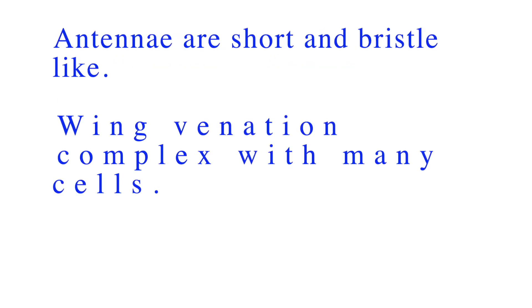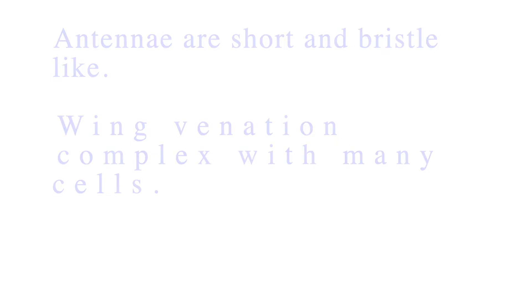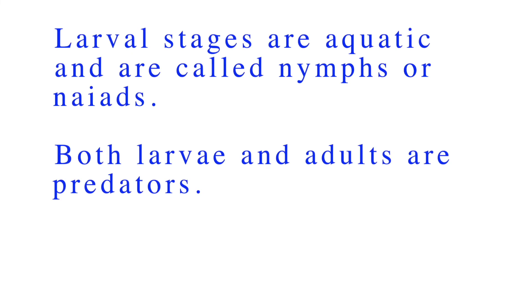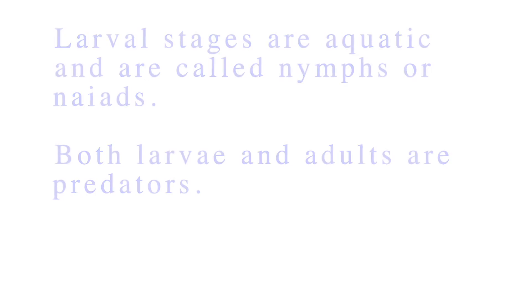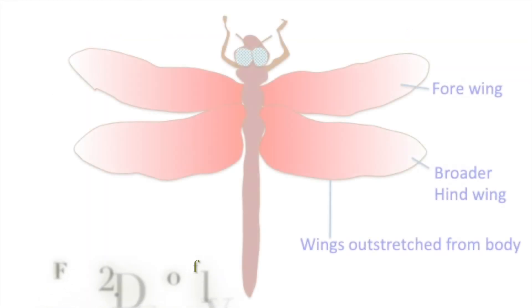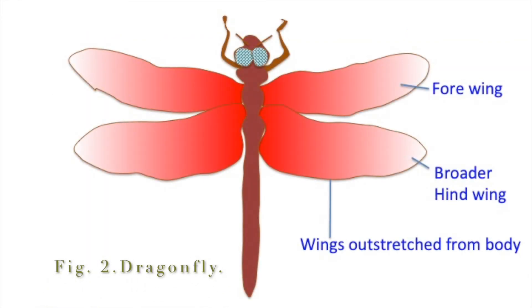Wing venation is complex, with many cells in the areas surrounded by the wings. Larval stages are aquatic and are called nymphs or naiads. Both larvae and adults are predators. Dragonflies position their wings outstretched from the body.